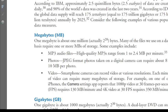A JPEG photo taken on a digital camera can require about 8 to 10 MB. A smartphone camera can record video at various resolutions — each minute of video can require many megabytes of storage. For example, 1080p video requires significant storage per minute.